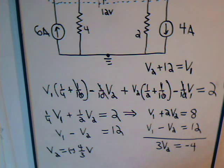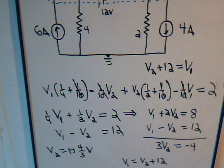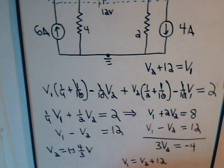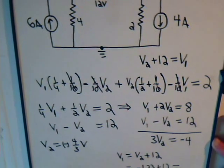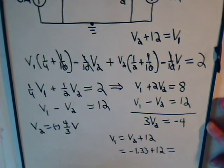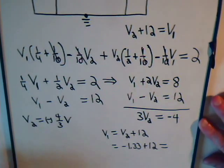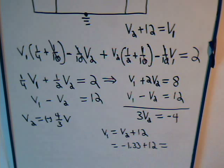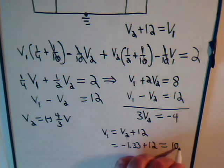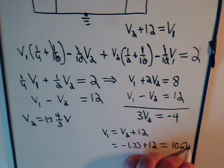And what about V1? V1 equals V2 plus 12. That's negative 4/3 plus 12, which equals plus 10.67 volts.